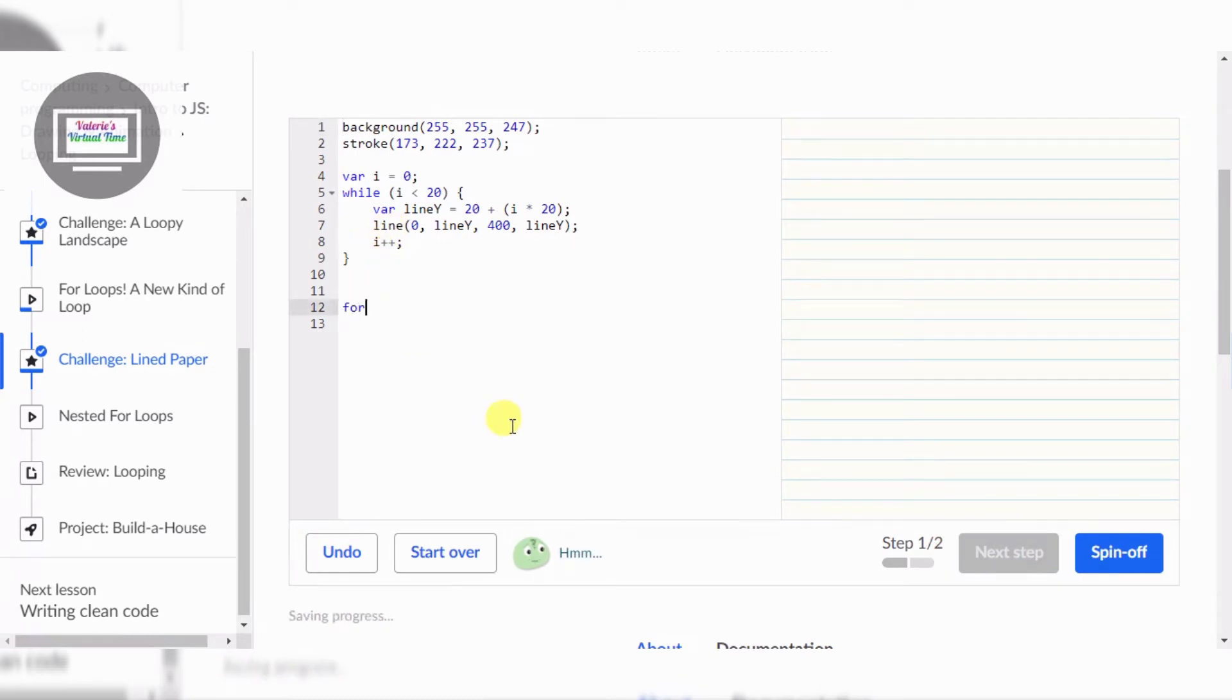So first we're going to make a for loop. And then we're going to type var i equals zero. And we're going to purposely put a comma there. That's to space, to space out.